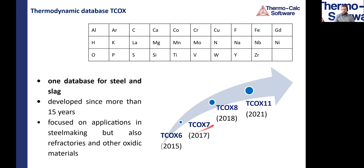While steel making is a very important application, this database is not only for steel making — it can also be used for refractories and other oxidic materials. Already between 2018 and 2021 there have been quite some shifts, with major versions 8, 9, 10, and 11 — so four major versions in these three years.